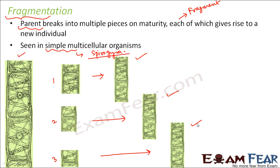Try to understand this logically. If you consider the same thing for complex multicellular organisms like human beings — if you cut a human being into three parts, not each of those parts will be able to give rise to a new human being. That is because human beings are not just an aggregate of cells; some cells specialize to perform specific functions and the complexity is much greater. Therefore this kind of reproduction is possible only for simple multicellular organisms. Complex and advanced modes of reproduction are present for complex animals, which we will see later.